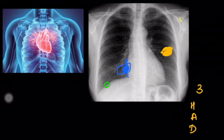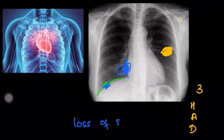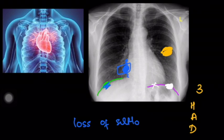For example, you have a lesion here. If this lesion is in anatomic contact with the heart, this border is obliterated. Or you have another lesion over here — if this lesion is in anatomic contact with the diaphragm, its border is obliterated, i.e., the shadow merges with the diaphragm. Always remember, the Silhouette sign refers to the loss of Silhouette.